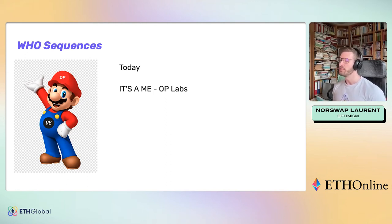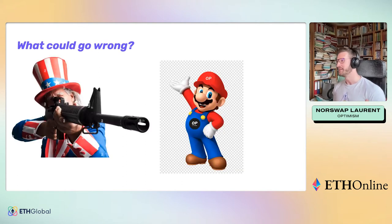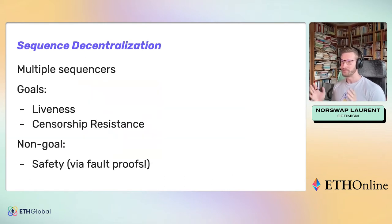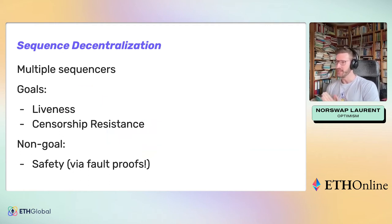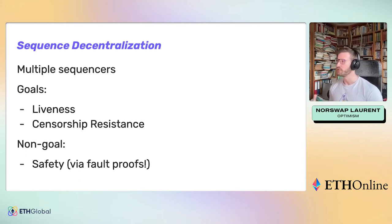It's very simple. We haven't done a lot of work on this yet. What could go wrong? Censorship, all that bad stuff. So what you really want to do is decentralize the sequencer, which means having multiple sequencers that cooperate to produce blocks.